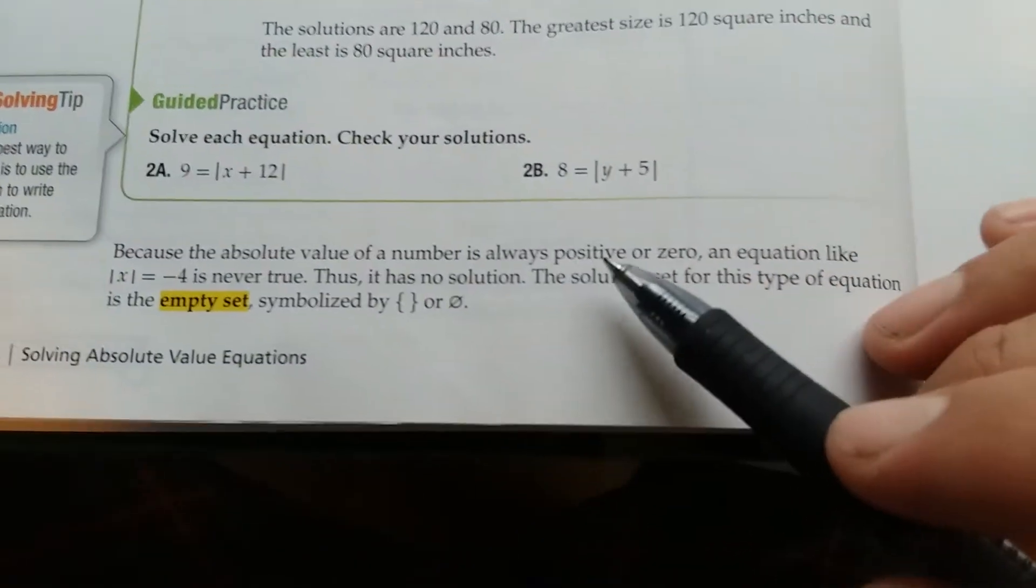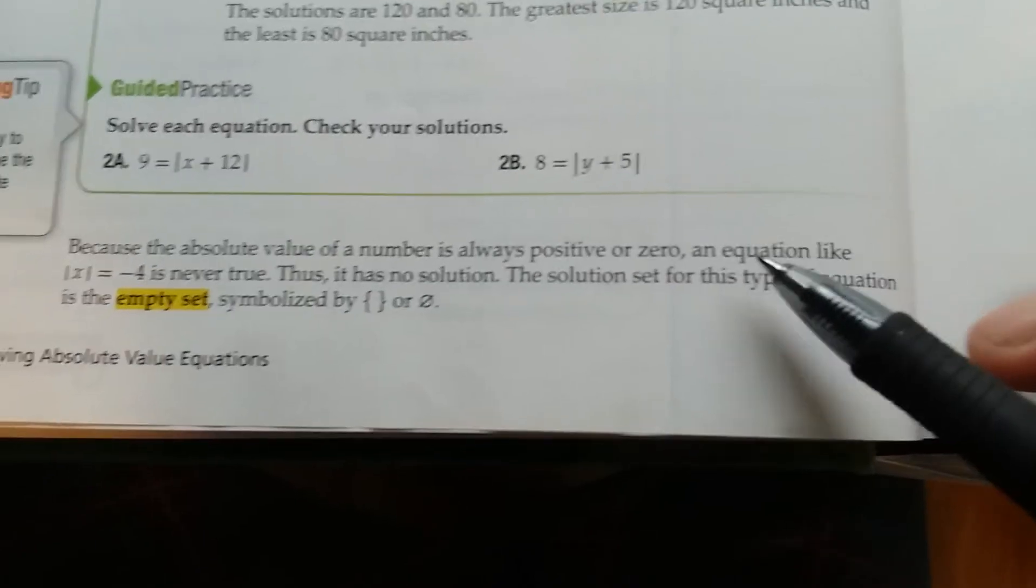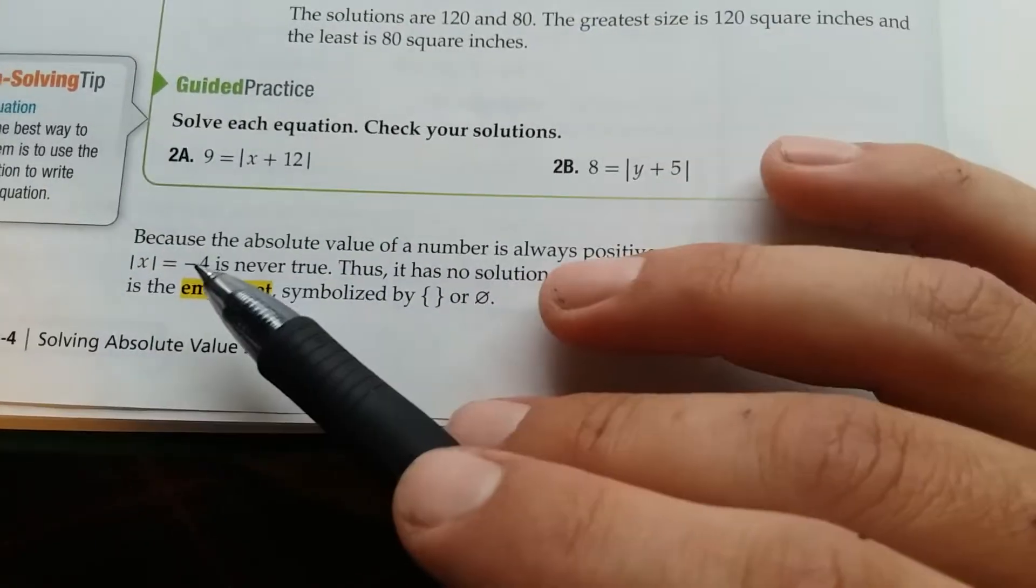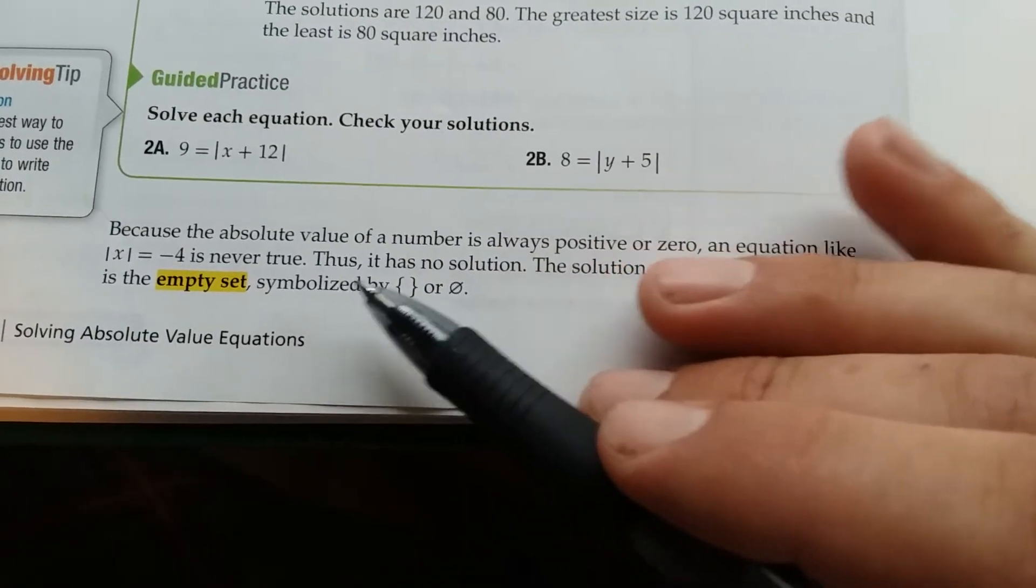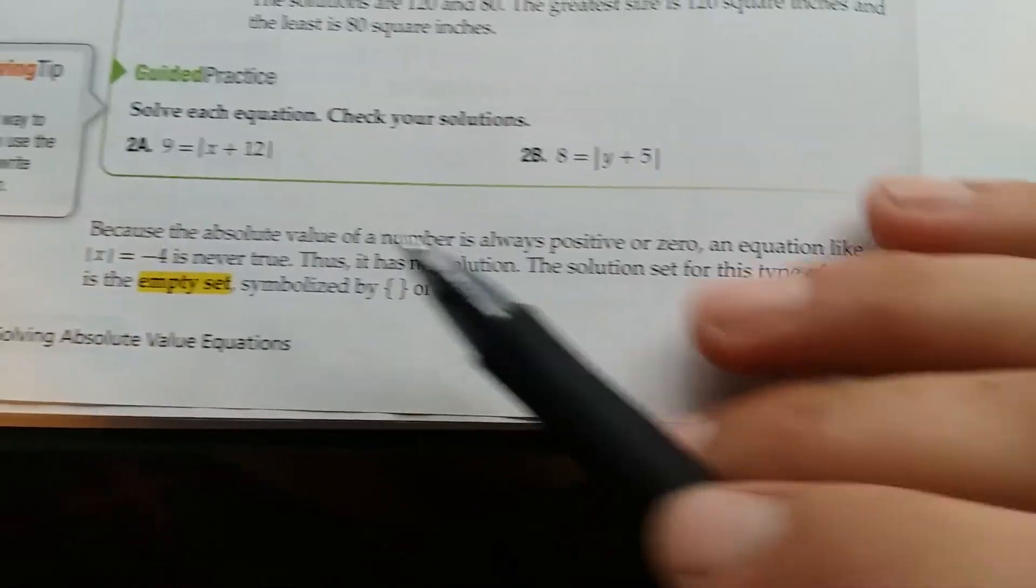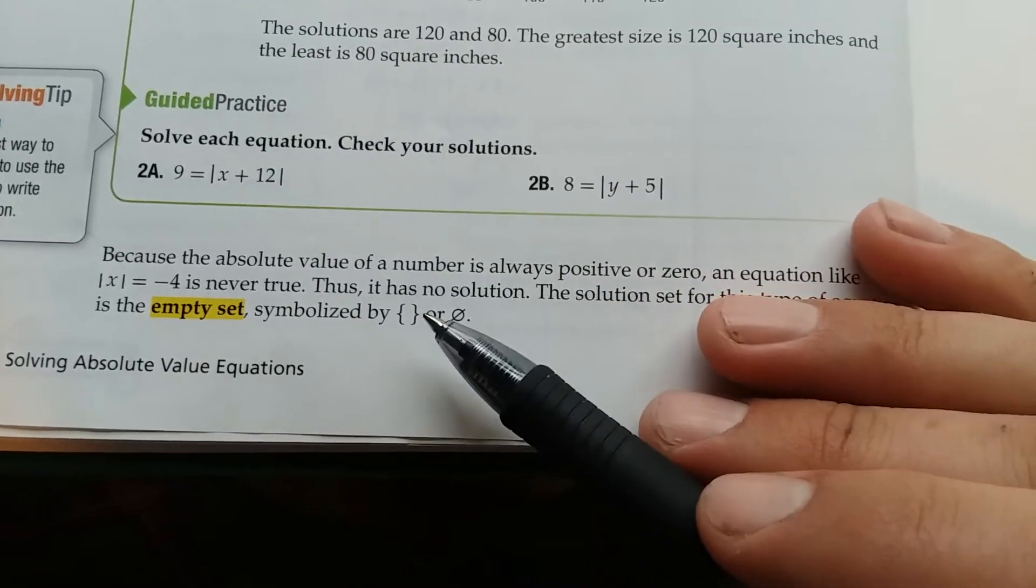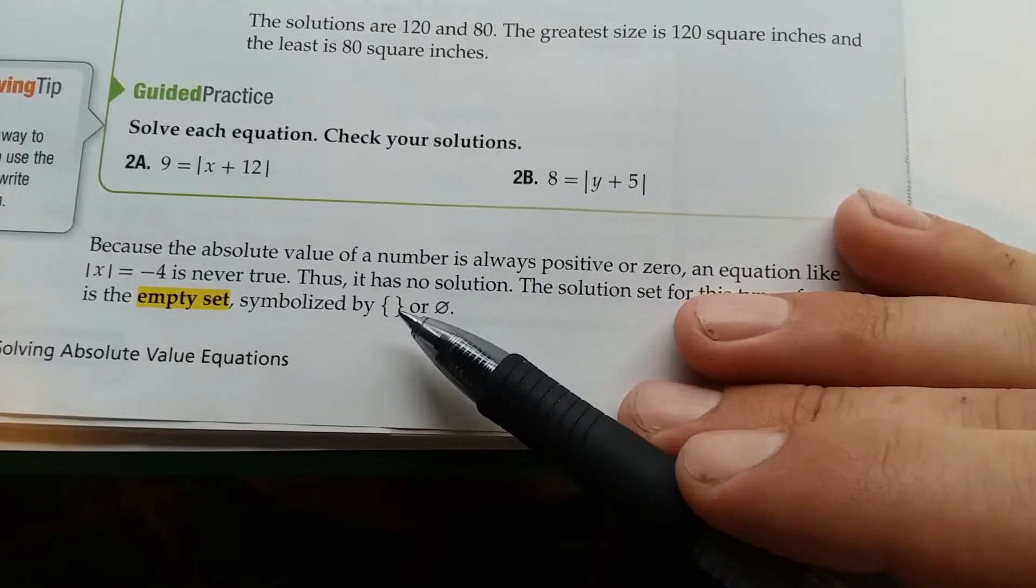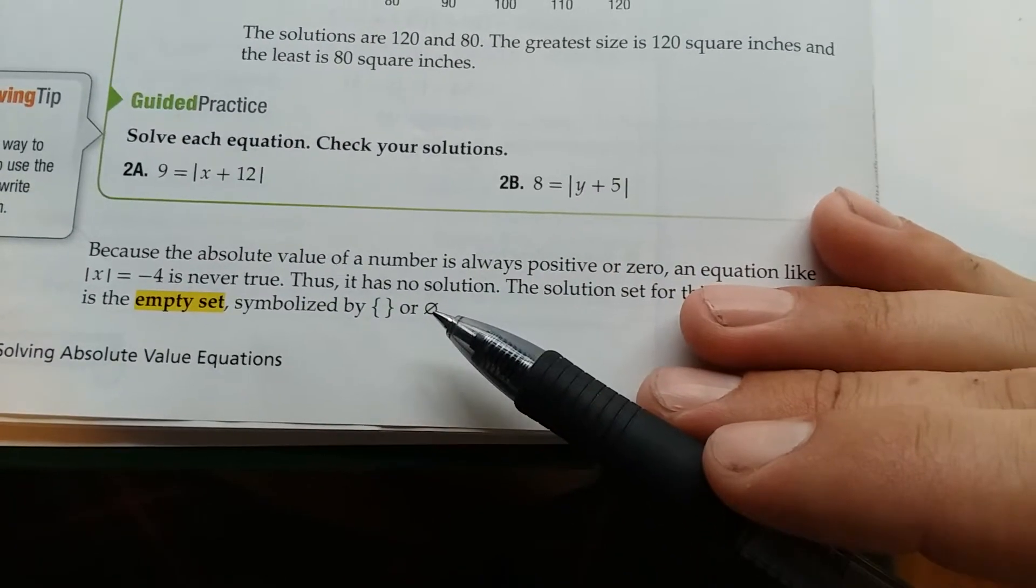Because the absolute value of a number is always positive or 0, an equation like the absolute value of x equals negative 4 is never true, and thus it has no solution. The solution set for this type of equation is the empty set, symbolized with braces with nothing in between them or a circle with a line through it.